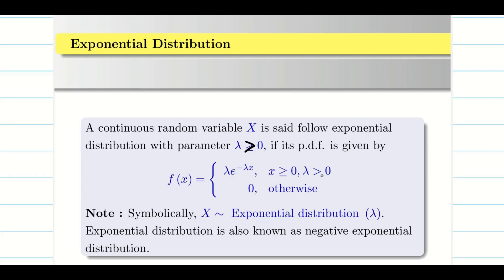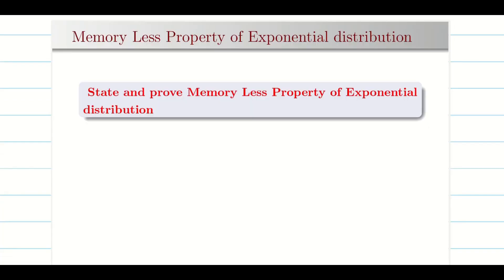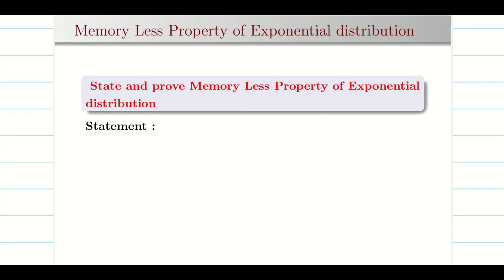Lambda is the parameter here; it should be greater than 0 and x should always be greater than or equal to 0. We are going to prove the memoryless property. Let us see what the memoryless property is.